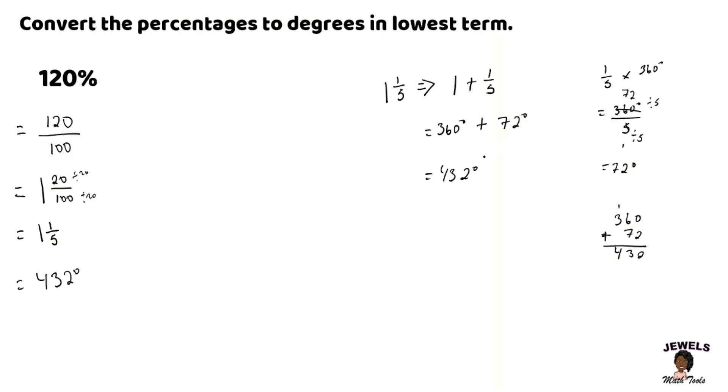Okay so there you have it we just went through two methods of changing our percentage larger than 100 percent into degrees and we saw that in the first part of the first part of our session we changed this percentage into degrees by multiplying our improper fraction by 360.